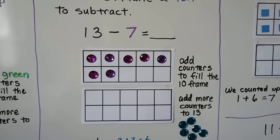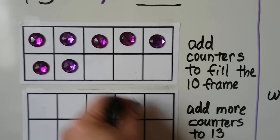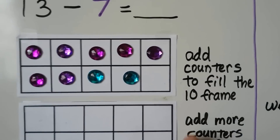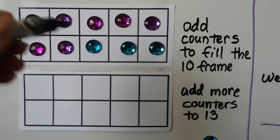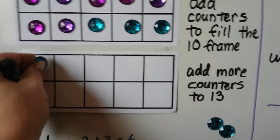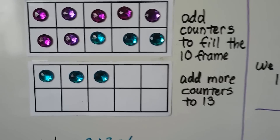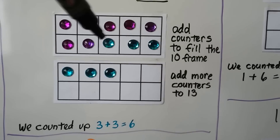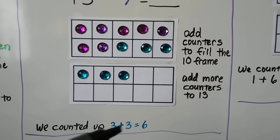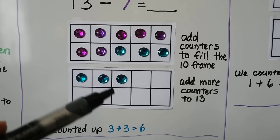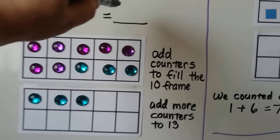We add counters to fill the 10 frame. We've got seven purple — eight, nine, ten. We add more counters to 13: ten, eleven, twelve, thirteen. We counted up three and three more. That's three plus three is six. We counted up six to get to 13, so 13 minus seven is equal to six.